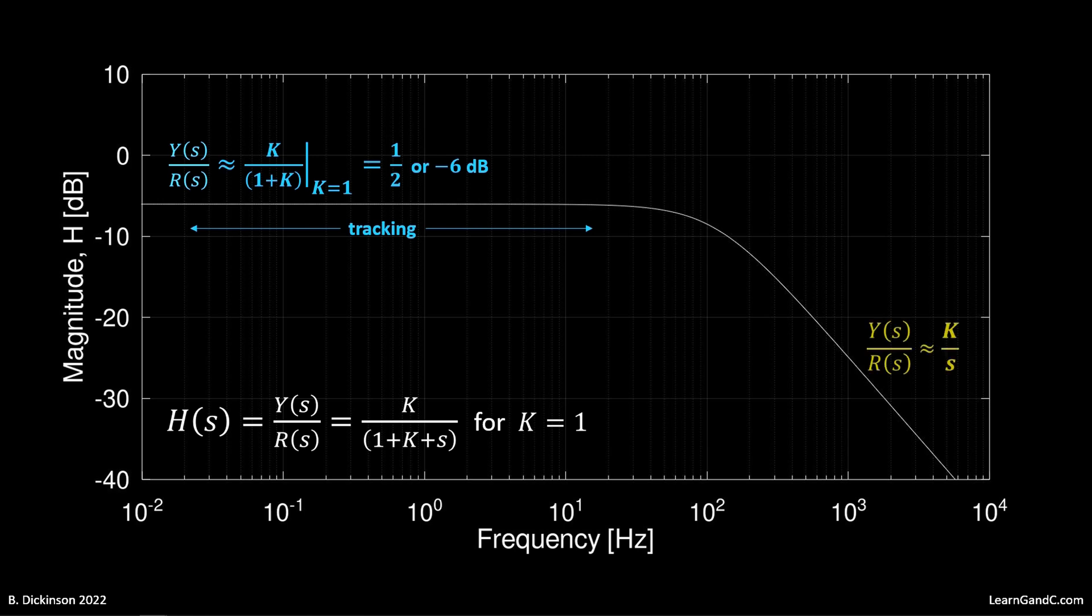It behaves as K over S with a slope of minus 20 dB per decade. As magnitude rolls off, tracking quality becomes insufficient. The frequency up to which tracking is acceptable is referred to as bandwidth.